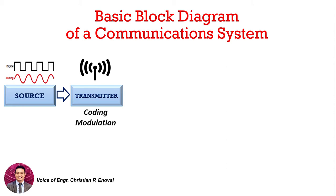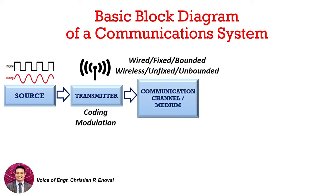It will be followed by the transmitter block. A transmitter is defined as a collection of one or more electronic devices or circuits that converts the original source information to a form more suitable for the transmission media. So before we transmit the source information over the communications channel, it must first be converted into a compatible form — and that's what the transmitter does.